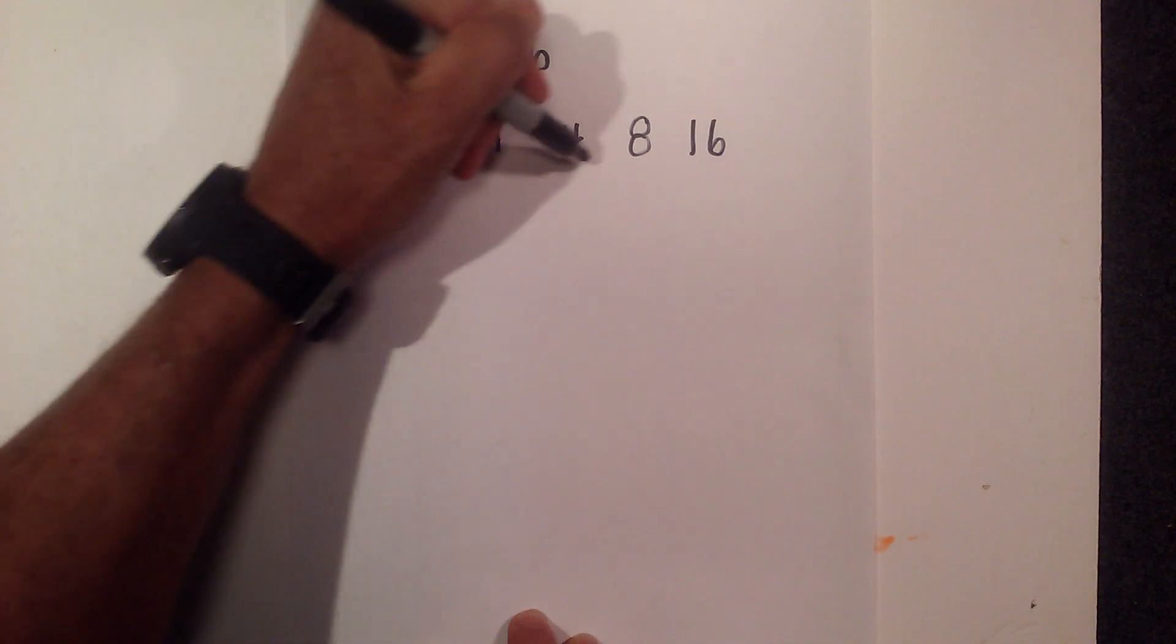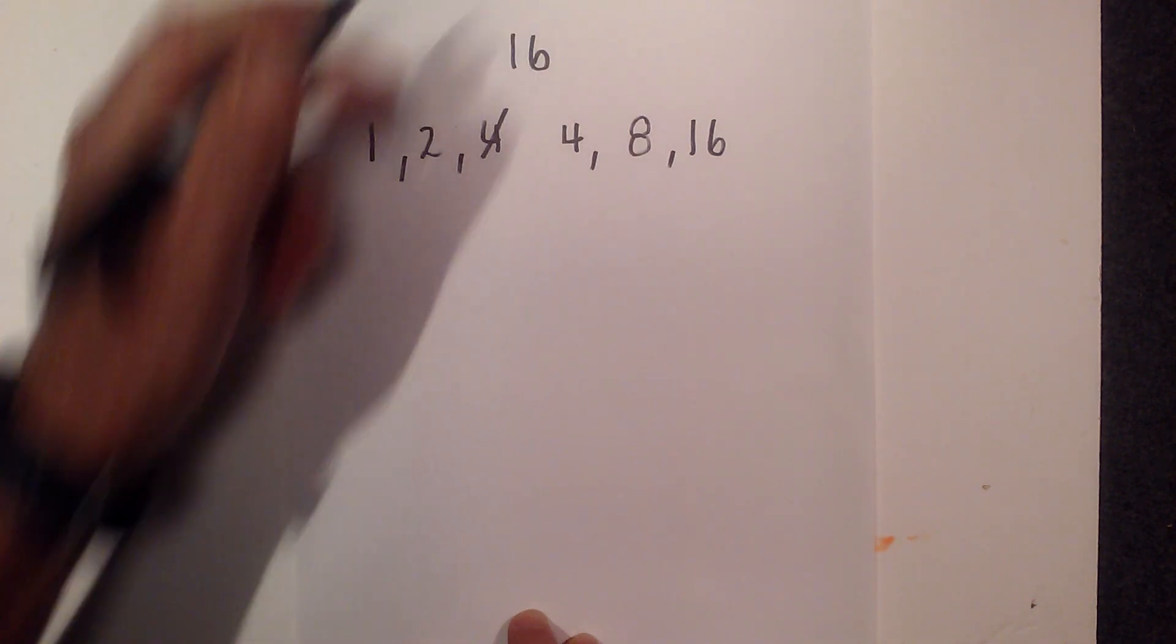So the factors of 16 are 1, 2, 4, 8, and 16.